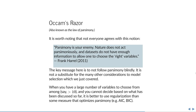Parsimony is not always a goal and you shouldn't always follow Occam's razor. It depends on what you're using the model for. Frank Harrell, a famous contemporary statistician, has said that parsimony is your enemy — nature does not act parsimoniously, and datasets don't have enough information to allow one to choose the right variables. The key message is that you shouldn't follow parsimony blindly; it is not a substitute for all the other considerations discussed. If you have a large number of variables — more than 10 — rather than removing them one by one, it is much better to include them all and use regularization, which will be discussed in a later lecture.